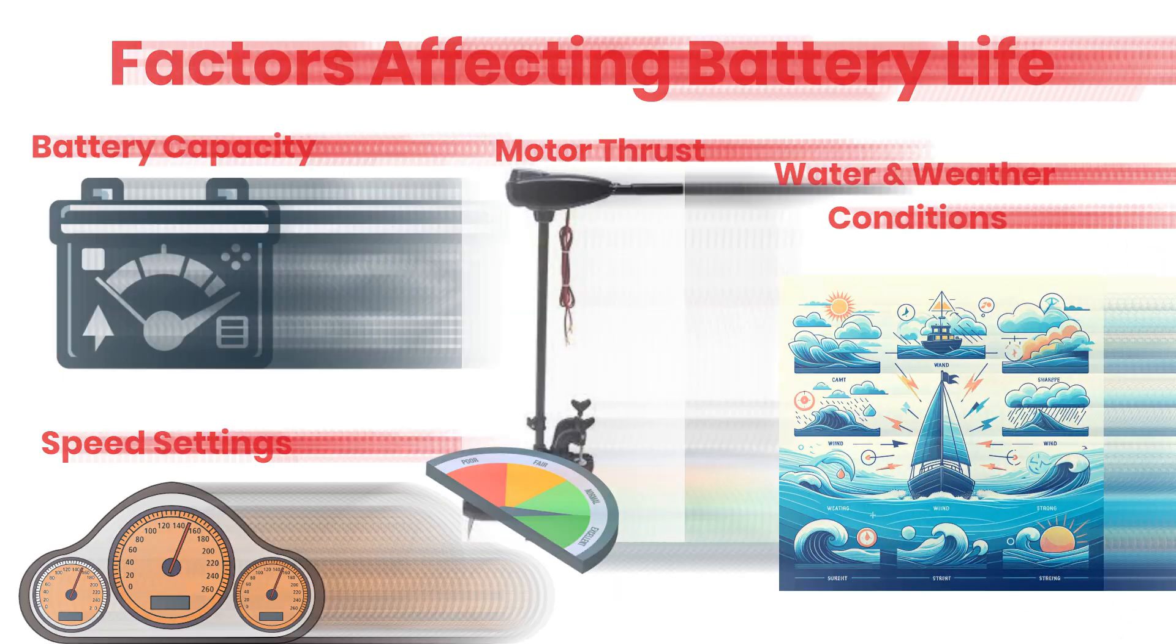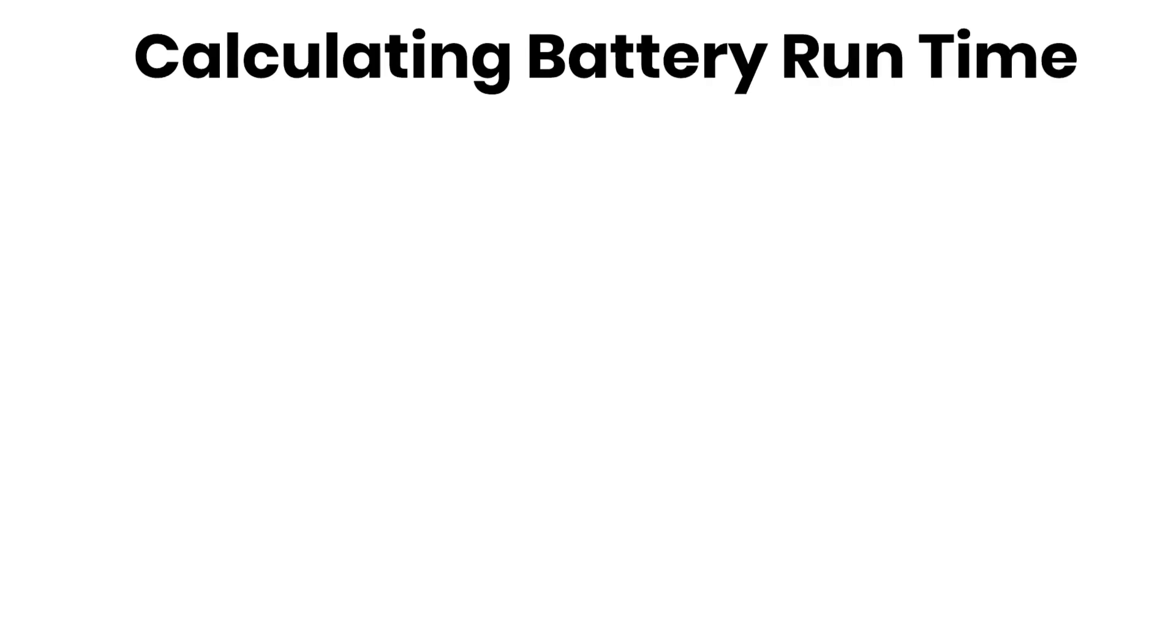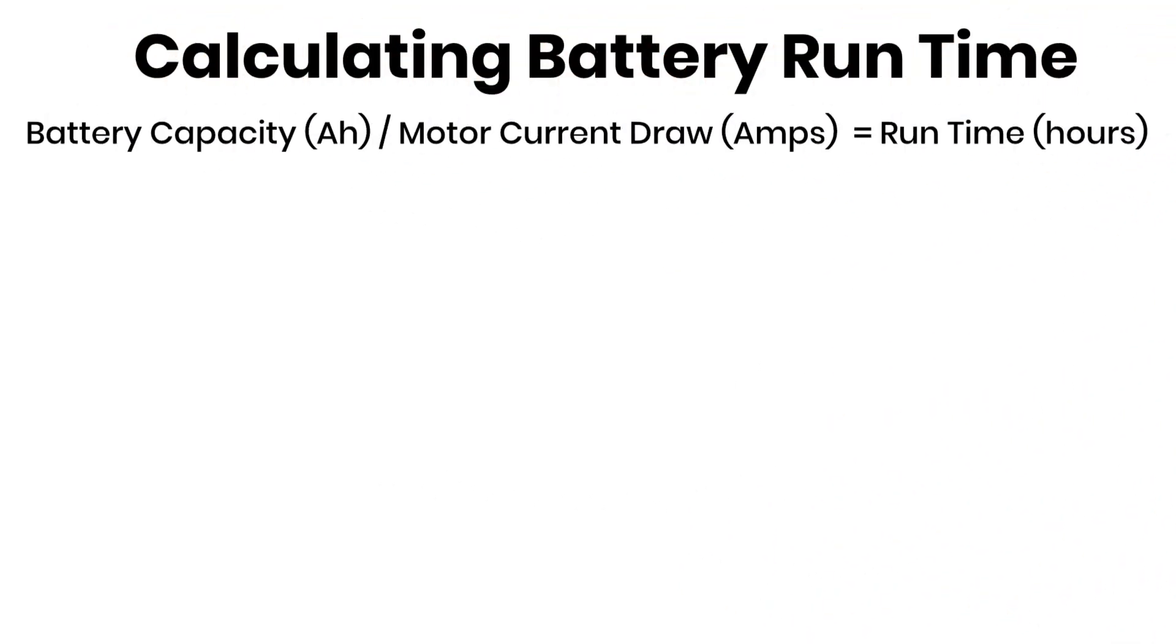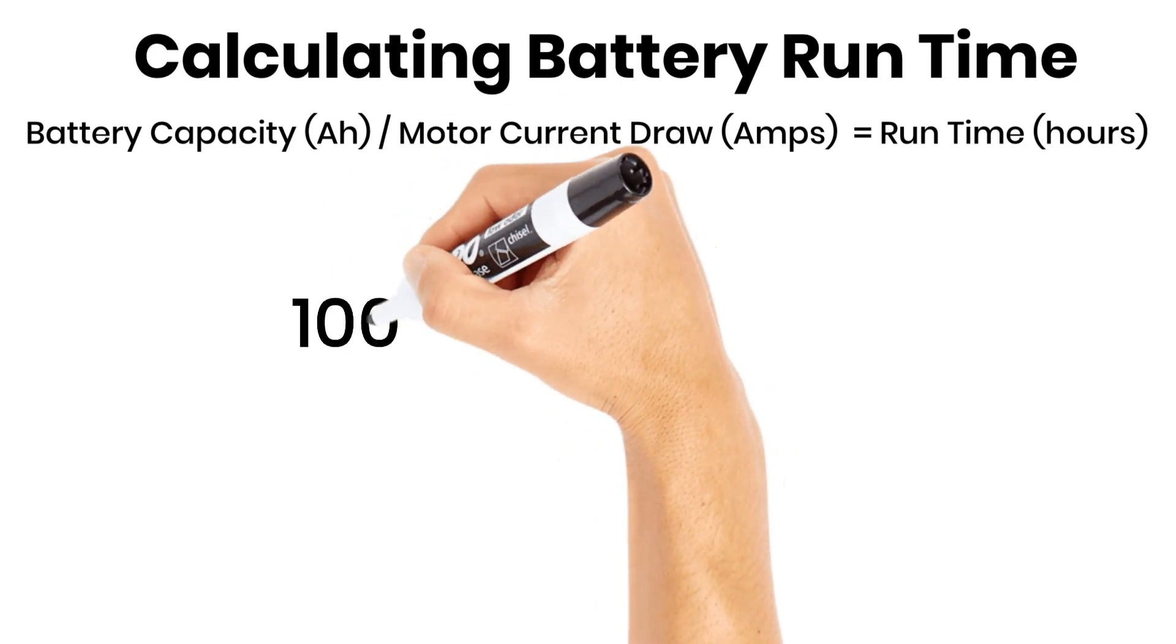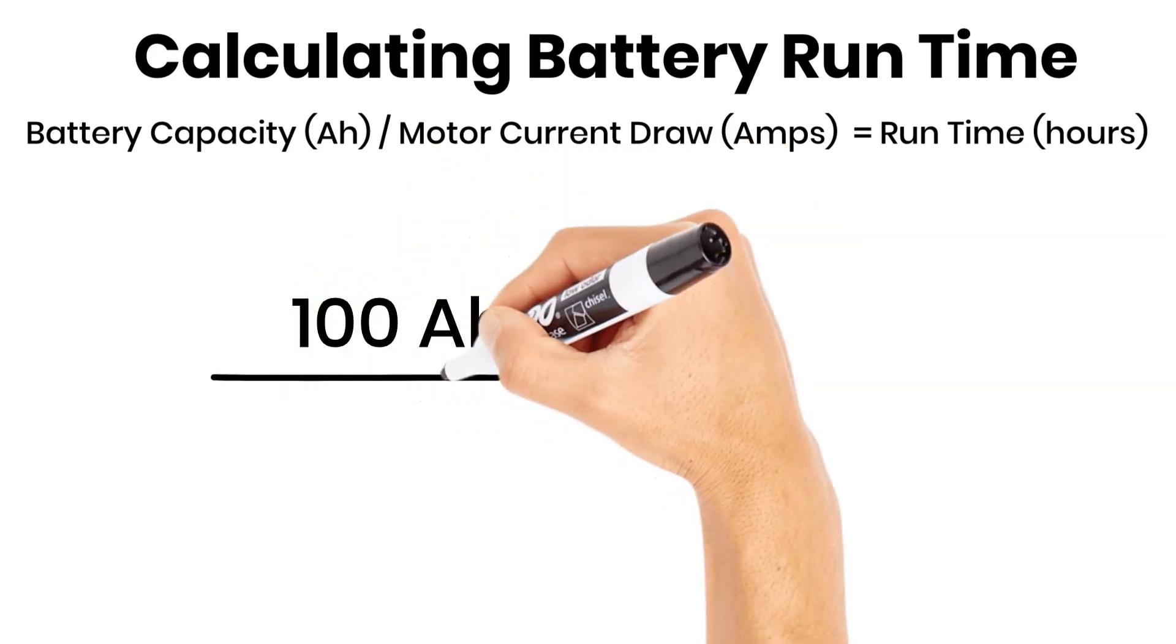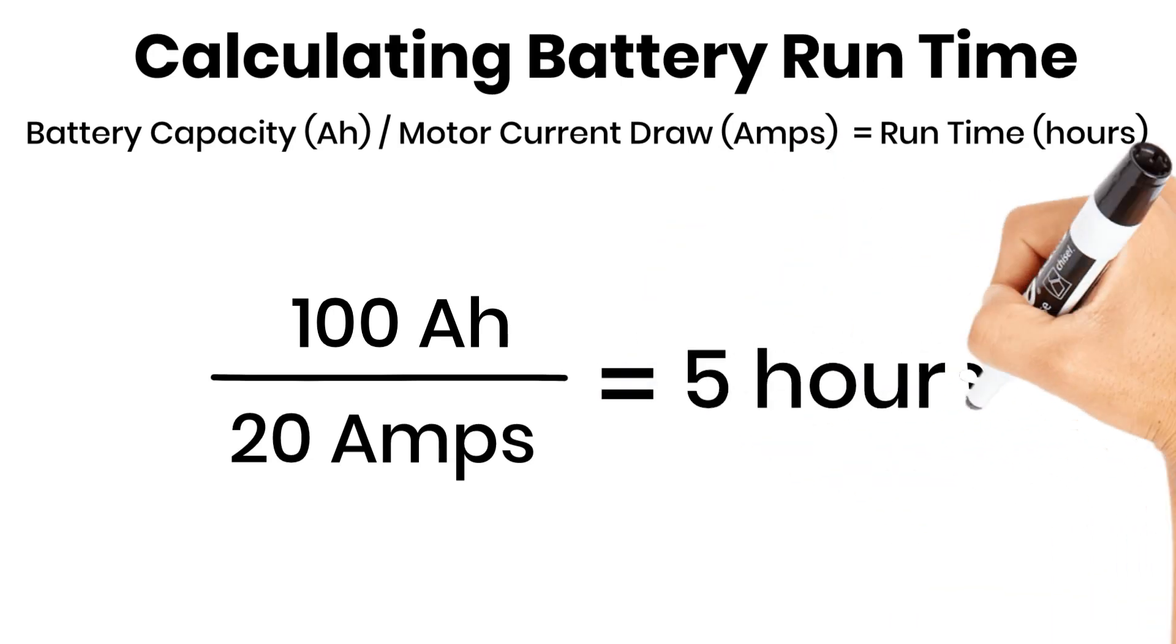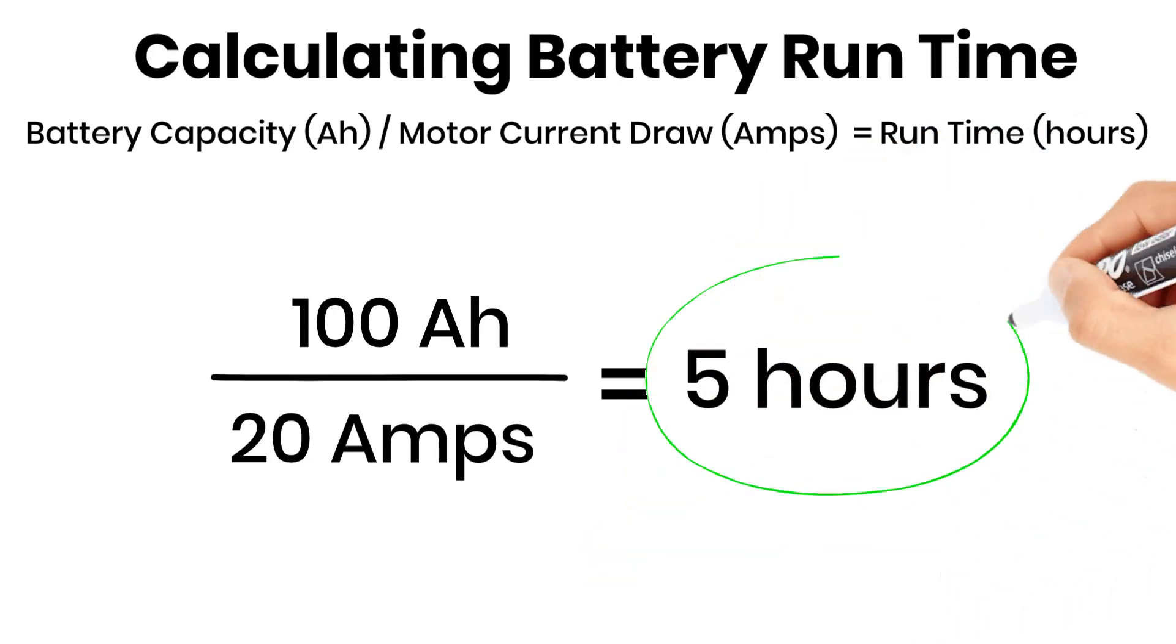Now let's talk numbers. To estimate how long your 12-volt battery will run a trolling motor, use this formula. For example, with a 100 ampere-hour battery and a motor that draws 20 amperes, the calculation would be 100 ampere-hour divided by 20 amperes. This equals 5 hours, meaning your 100 ampere-hour battery will run 5 hours.